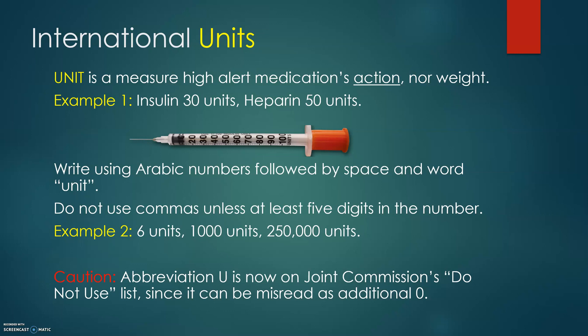Here is an example on the screen of a syringe calibrated in exactly units. Write using Arabic numbers followed by a space and the word 'units.' Do not use commas unless there are at least 5 digits in the number. Example: 6 units — 1 digit, no comma. 1,000 units — 4 digits, no comma yet. 250,000 units — more than 5 digits, so we use the comma.